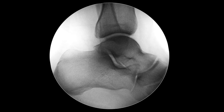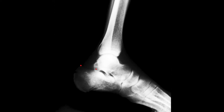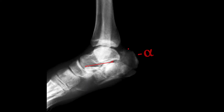Diminished Böhler's angle. To find this angle, the surgeon has to draw two lines: one goes from the upper point of the anterior process to the posterior articular facet, and another goes from the upper point of the calcaneal tuber to the same point of the posterior articular facet. Usually its value is between 20 and 40 degrees. After a fracture, it goes down to zero or to negative values.